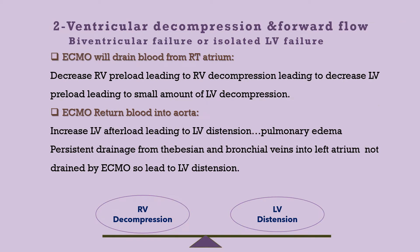When using ECMO in biventricular failure or isolated left ventricular failure, it should balance RV decompression and LV distension. ECMO drains blood from the right atrium, decreasing right ventricular preload and leading to right ventricular decompression. However, with peripheral VA ECMO, returning blood into the aorta increases left ventricular afterload, leading to left ventricular distension and potentially pulmonary edema. For more details, refer to the VA ECMO physiology lecture.